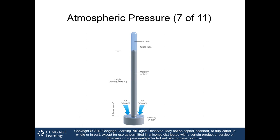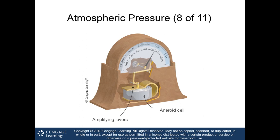In a mercury barometer, mercury sits in a dish at the base. When air pressure increases and molecules are packed more densely, they push on the mercury in the dish, causing the fluid in the vacuum glass tube to rise higher. An aneroid barometer, meaning without liquid, uses a more sophisticated design with amplifying levers and an aneroid cell. The glass face typically shows labels like stormy, rain, changes, fair, or dry — ranging from about 980 millibars up to 1,040 millibars.